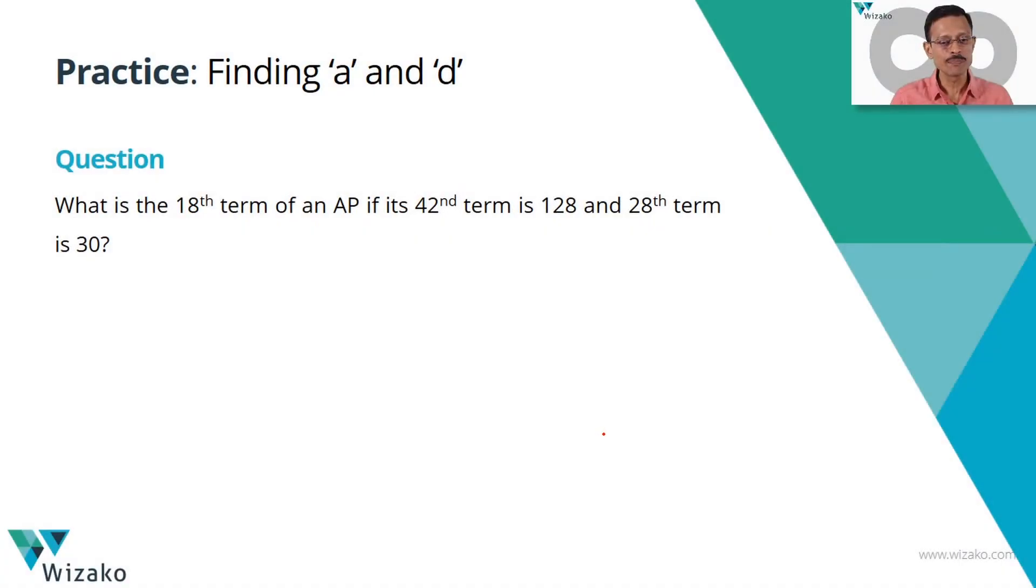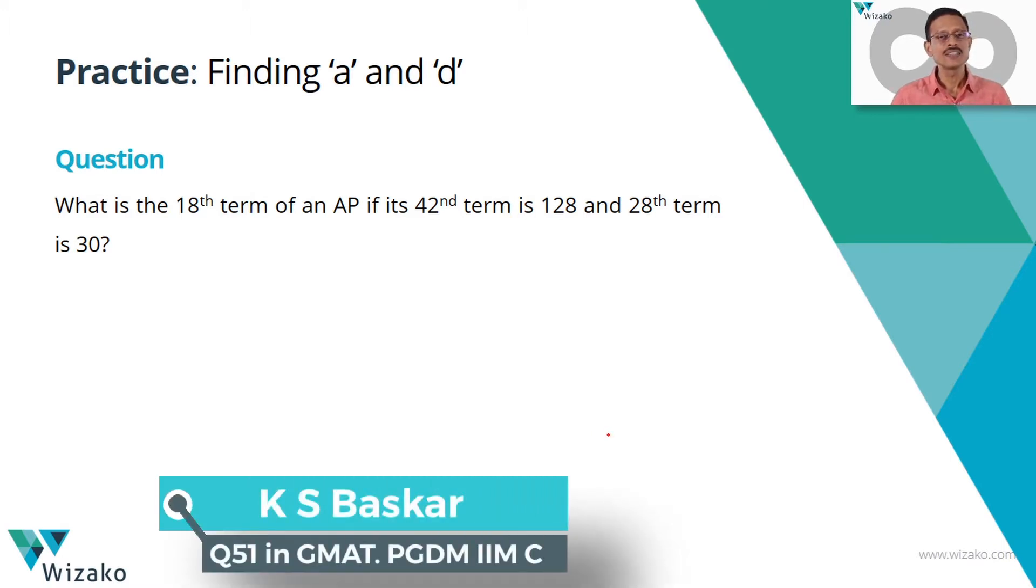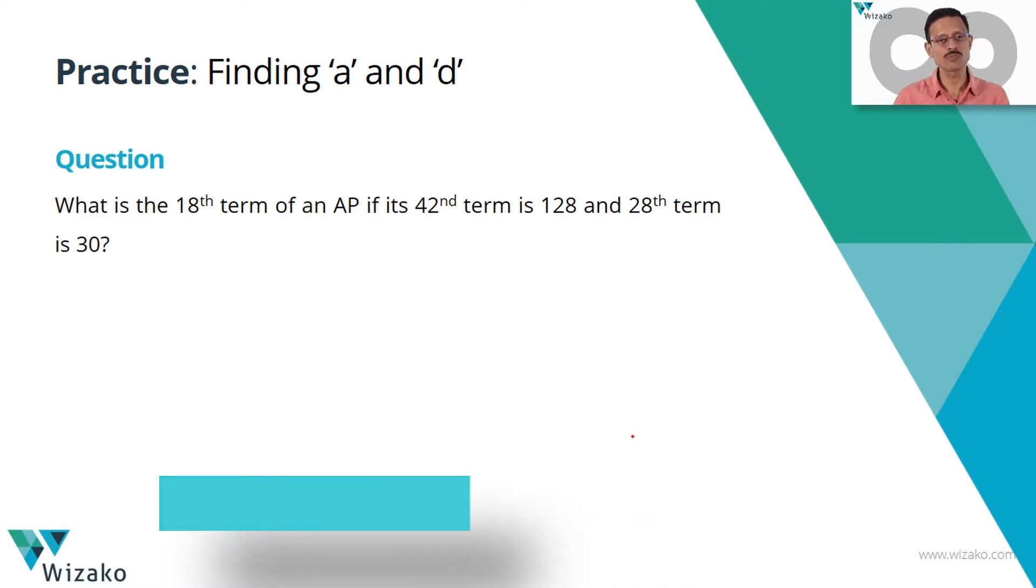What is the 18th term of an AP if its 42nd term is 128 and 28th term is 30? There are two approaches to solving this question. One is a textbook approach and the second one is an approach which is modifying the textbook method.